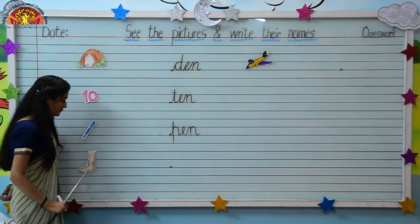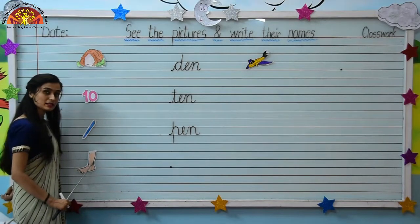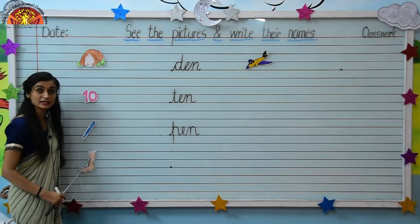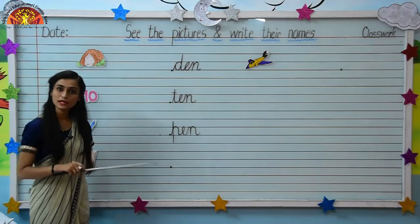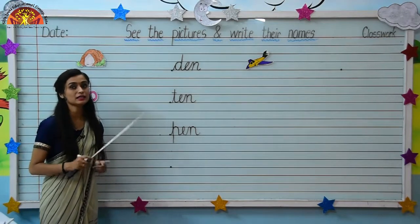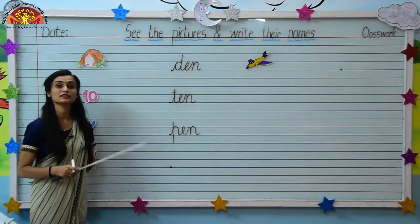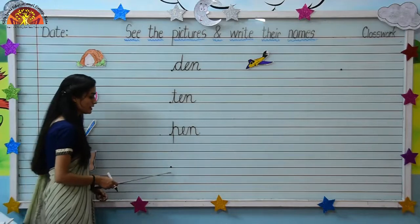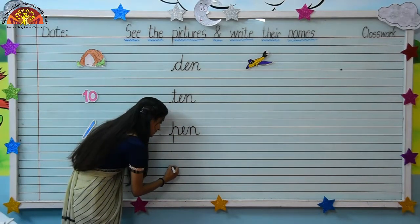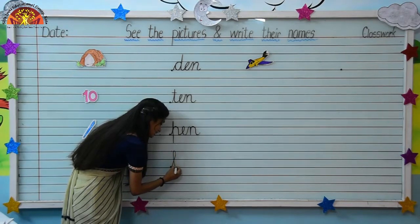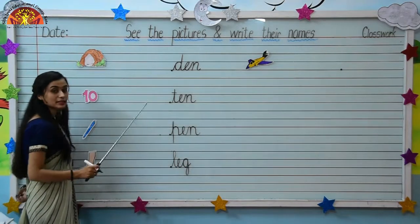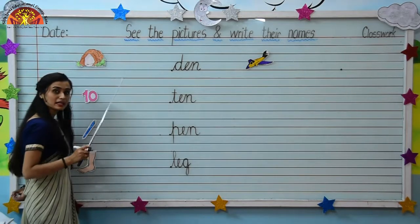Come to the next picture kids. Tell me what is this? Which picture is this? This is LEG. And what is the spelling of LEG? The spelling of LEG is L-E-G. We will write the spelling over here in front of the picture of LEG: L-E-G.